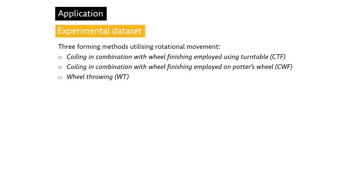In our pilot study, we employed the analysis on a collection of three forming methods utilizing rotational movement. The first is coiling in combination with wheel finishing employed using a turntable. The vessel is formed by coiling and subsequently the rotational movement is used for surface modifications and minor shape corrections. The pressure is exerted by fingers in this technique. The turntable produces a very small amount of rotational energy that does not allow effective use of continuous pressure. Additionally, fingers are soft and curved tools which cause loss of energy needed for the transformation of the surface. As a result, the transformation rate of this technique is very low.